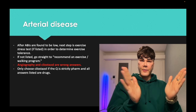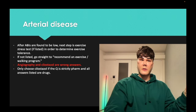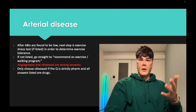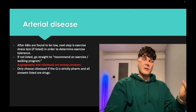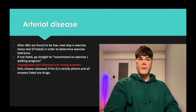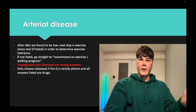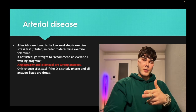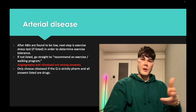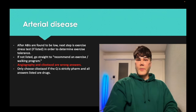You're going to get a patient who has, for example, intermittent claudication — you say that's arterial disease, ABIs first. Now let's say they tell you in the question ABIs are already done and they're 0.6. Next best step, if it's listed, is an exercise stress test to determine exercise tolerance. If that's not listed, the answer will be to recommend a walking or exercise program. About 50% of the time they want the exercise stress test as the next best step; if it's not listed but you see 'prescribe a walking program,' choose that.